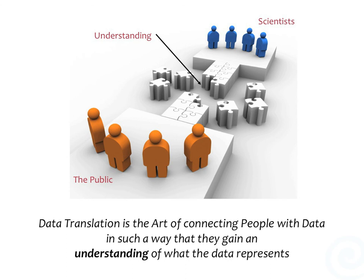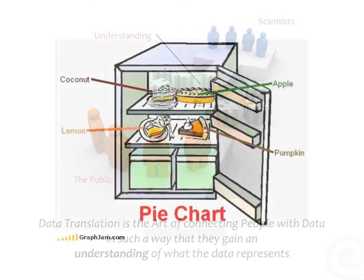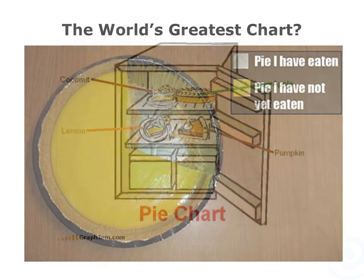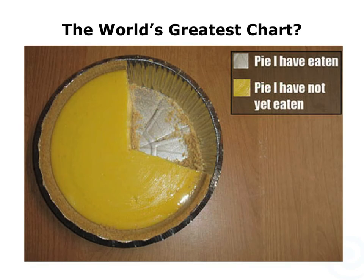But what is data visualization? There are many kinds of ways of representing data, and some of them are very cute and funny, like this pie chart, which is nothing more than a representation of a bunch of pies in a refrigerator. This is perhaps the world's greatest pie chart, representing the pie that I have eaten and the pie I haven't eaten. And it tells a very simple and compelling story. That's also a lot of fun.